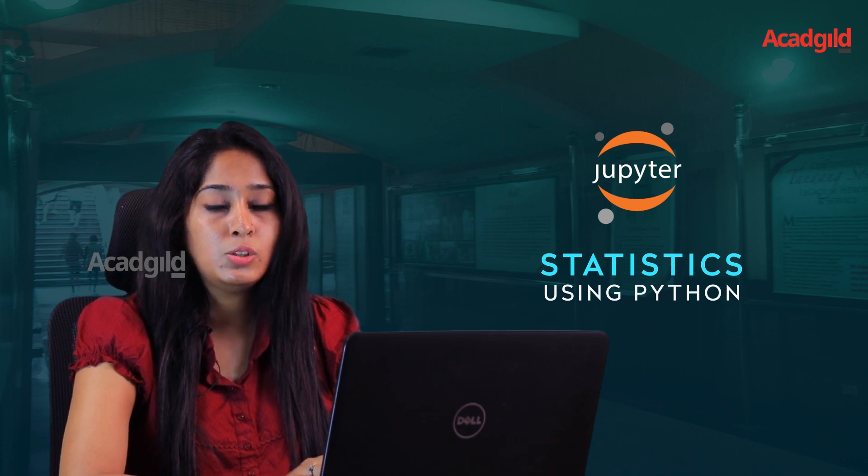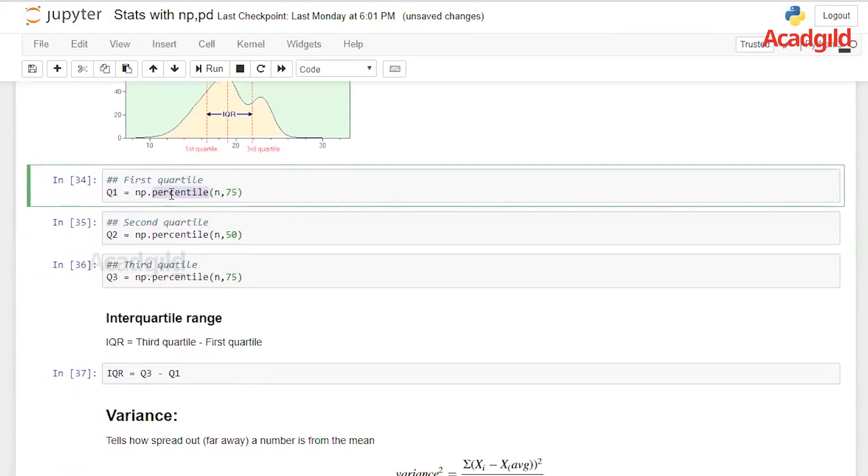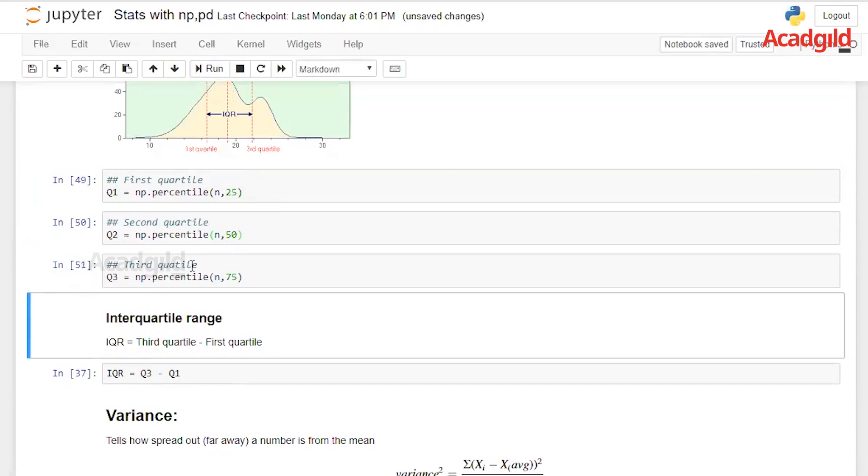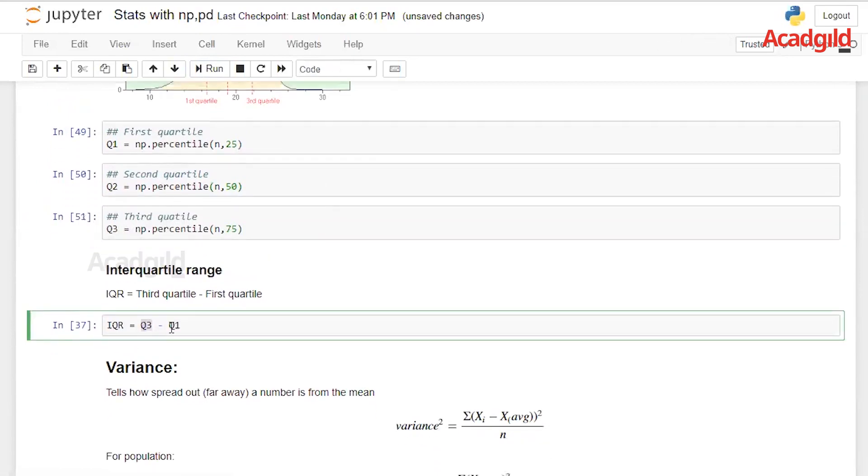Let us implement the same in our Jupyter notebook. I'm considering the previous example again to calculate this. NumPy has another module called percentile. You have to give the data set name or the list name and which percentile you require. In the first quartile, it would be the 25th percentile. In the second quartile, it would be 50. In the third percentile, it would be 75. And to calculate the interquartile range, we use the third quartile and the first quartile.